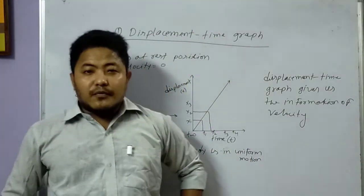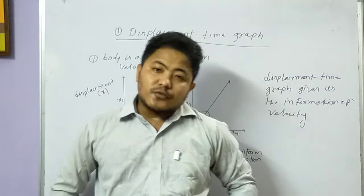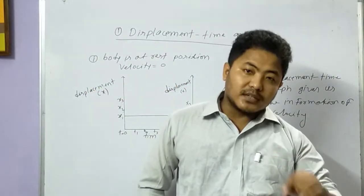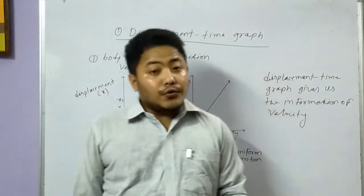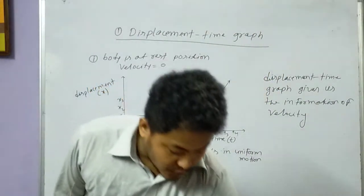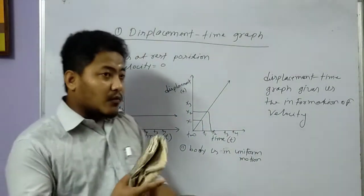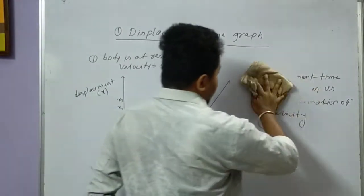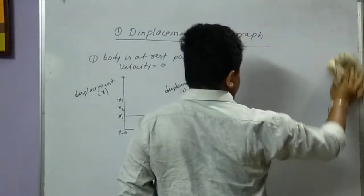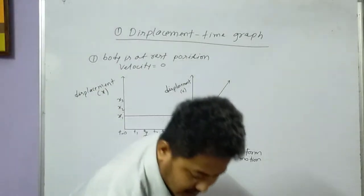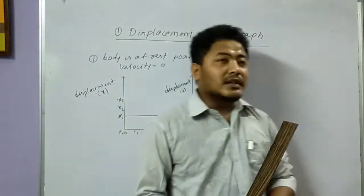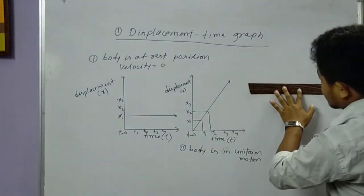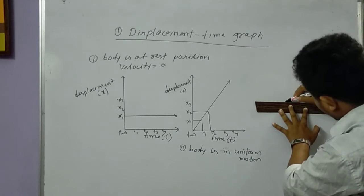So now you've found what type of graph appears for a body at rest position and what type of graph appears for a body in uniform motion. Now we will go to non-uniform motion. In non-uniform motion, a body covers unequal amounts of distance in equal amounts of time. For non-uniform motion, there will be two graph diagrams to consider.